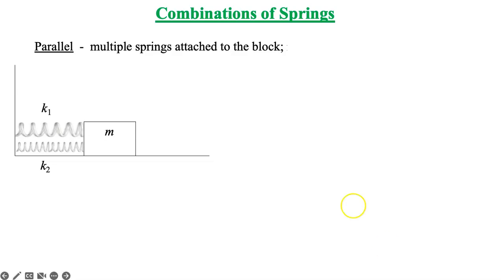We'll look at two main ways to combine springs. The first of this is called a parallel connection. We have multiple springs attached to the block or whatever the object is. Let's draw a picture. Seen from the side, we have a vertical wall and a horizontal flat surface there. And here's our block of mass m connected to two springs. The springs don't have to have the same spring constants.